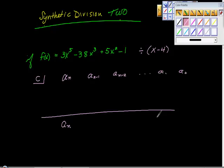As promised, synthetic division part 2. If f(x) equals 3x to the 5th minus 38x cubed plus 5x squared minus 1, what happens if we divide that by x minus 4?